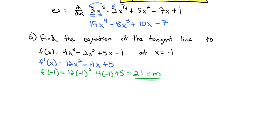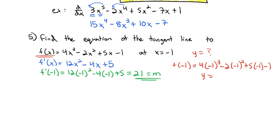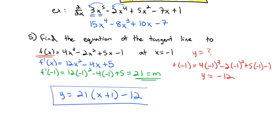We do need to know the y coordinate of this point. So we plug negative 1 into the original function: f of negative 1 equals 4 times negative 1 cubed, minus 2 times negative 1 squared, plus 5 times negative 1, minus 1. Our y coordinate is equal to negative 4 plus 2 minus 5 minus 1, which gives us negative 12. For the equation of our line: y equals 21 times x minus x1. Since x1 is negative 1, that becomes plus 1, minus 12. So our tangent line is 21 times x plus 1, minus 12.